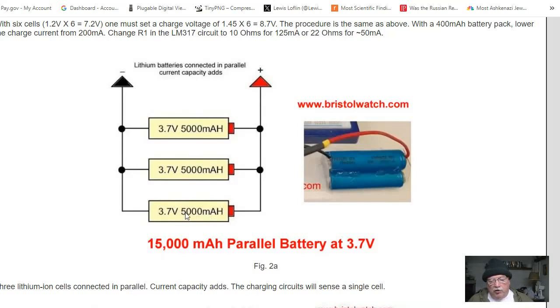Actually, these things operate at 3.82, but I'll explain that later. But the current capacity would add. So this is 15,000 mAh, or actually 15 Ampere hours, but it's only about a 3.7 volt cell.